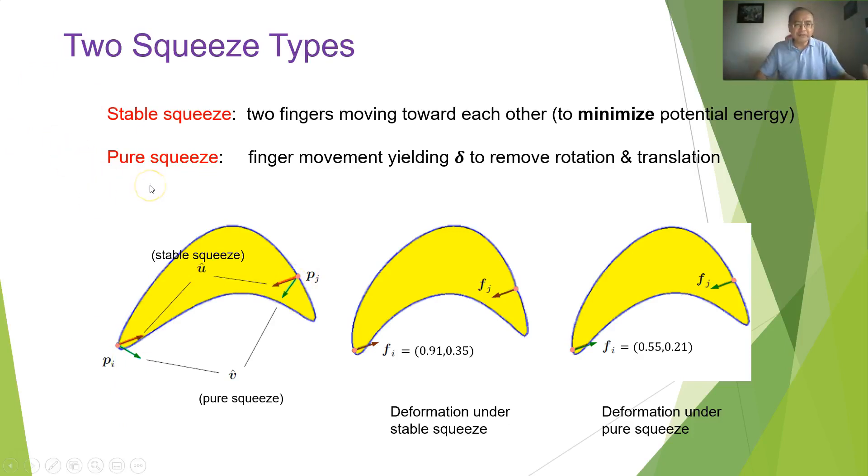The other type of squeeze will generate finger movements that result in no rotation or translation of the object. So it's more efficient in the sense. The pure squeeze directions are given by these two green arrows. As you compare the second and third figure, you see that a pure squeeze exerted about half the magnitude of force as stable squeeze.